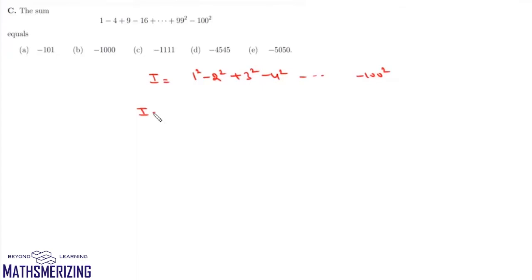Now we can rewrite the series as 1 square, 2 square, up to 100 square, and then minus 2 times 2 square plus 4 square up to 100 square.